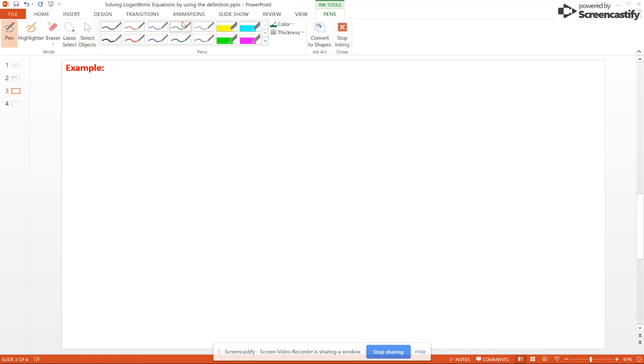Say that we had common log of x minus 2 plus 3 equals 0. Now here we're going to have a domain issue – not just x greater than 0. Your domain in this case is x minus 2 greater than 0, so it's going to be x greater than 2.